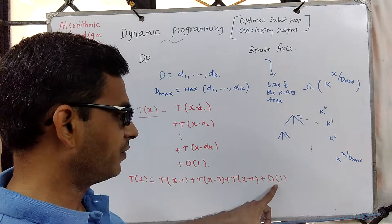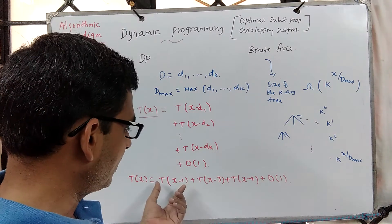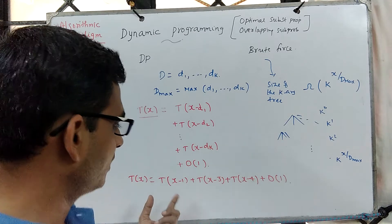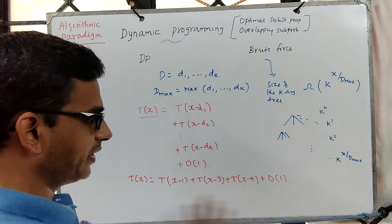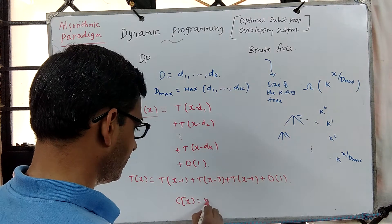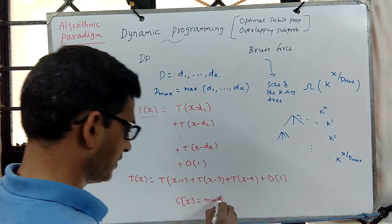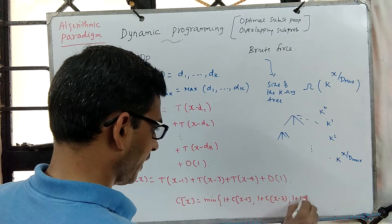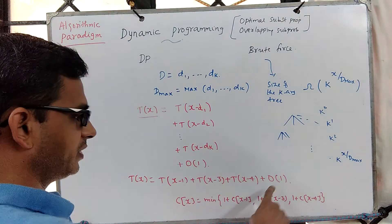This can be seen from two perspectives: first, getting into these subproblems, and second, combining their solutions to solve the original. We combine by computing 1 plus each subproblem result and taking the minimum — c(x) = min(1 + c(x-1), 1 + c(x-3), 1 + c(x-4)). That combining step is constant effort, captured by the O(1) term.